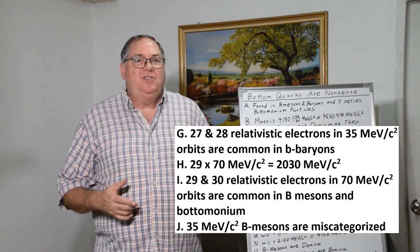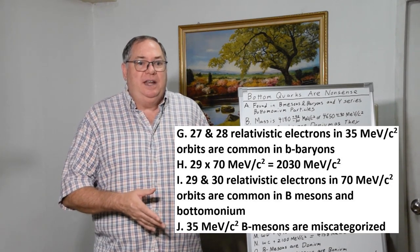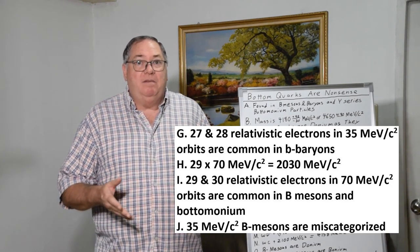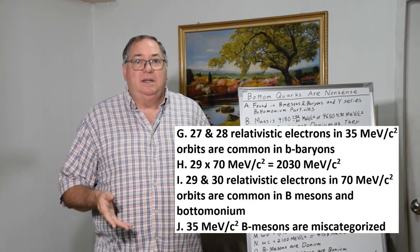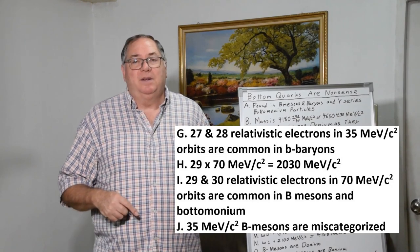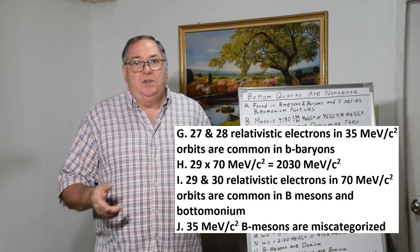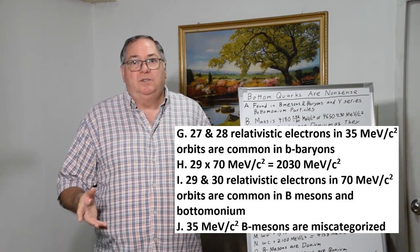One of the interesting things is that there are lower energy, the 945 or 980 MeV orbit mesons, but they're miscategorized because they're not recognized as being these two or four kaon structures, four kaon orbits.